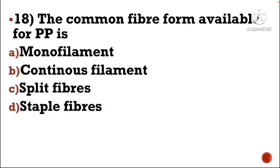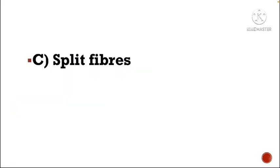Next question: The common fiber form available for PP — Option A: monofilament, Option B: continuous filament, Option C: split fibers, Option D: staple fibers. The correct answer is Option C, split fibers.